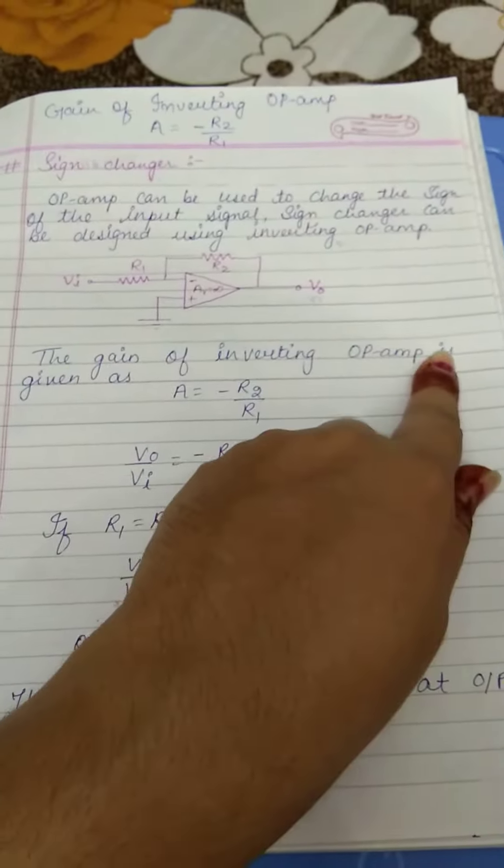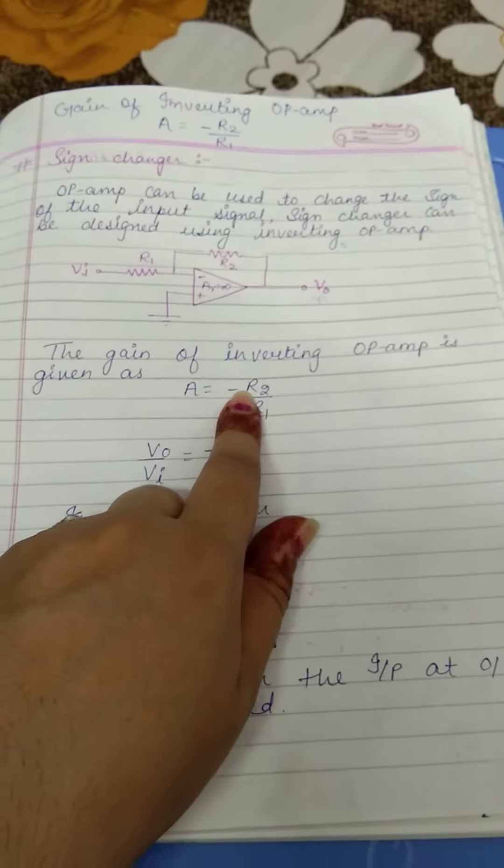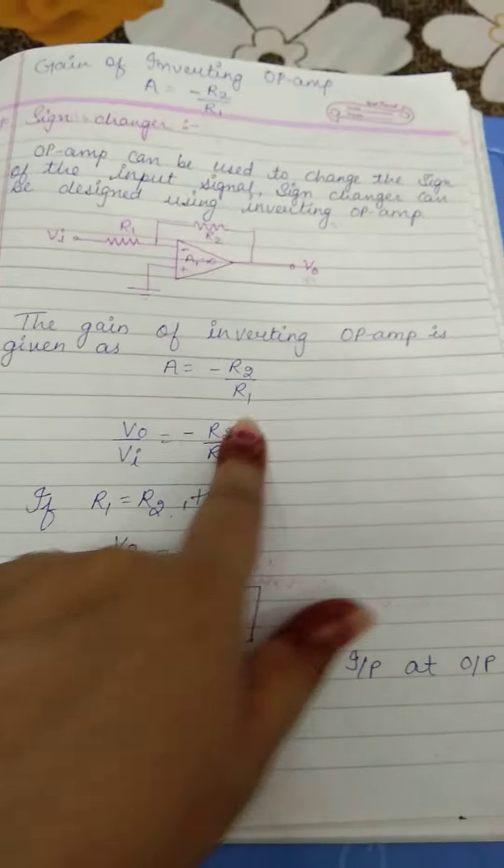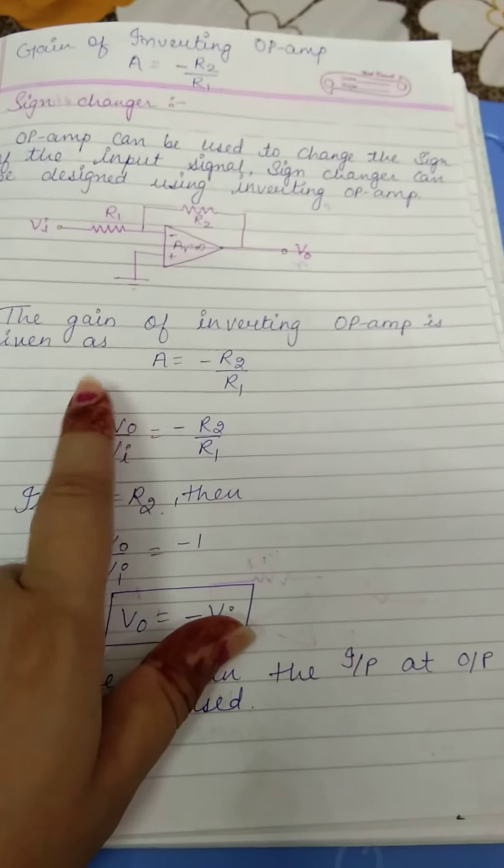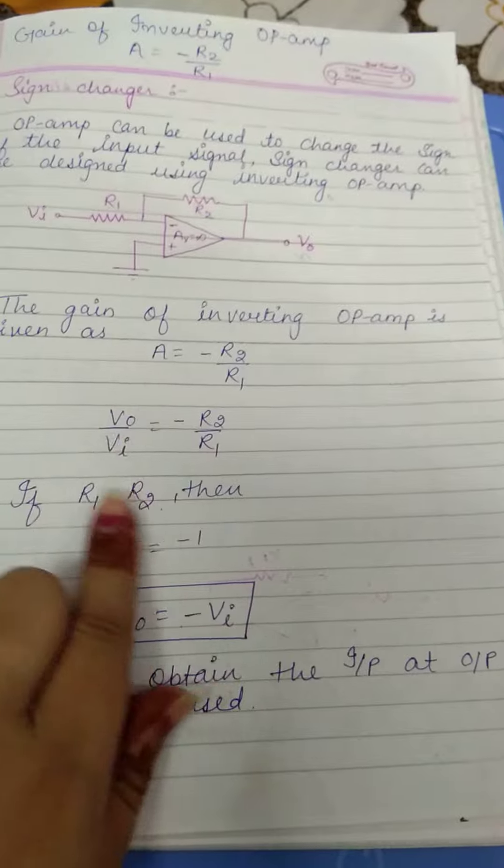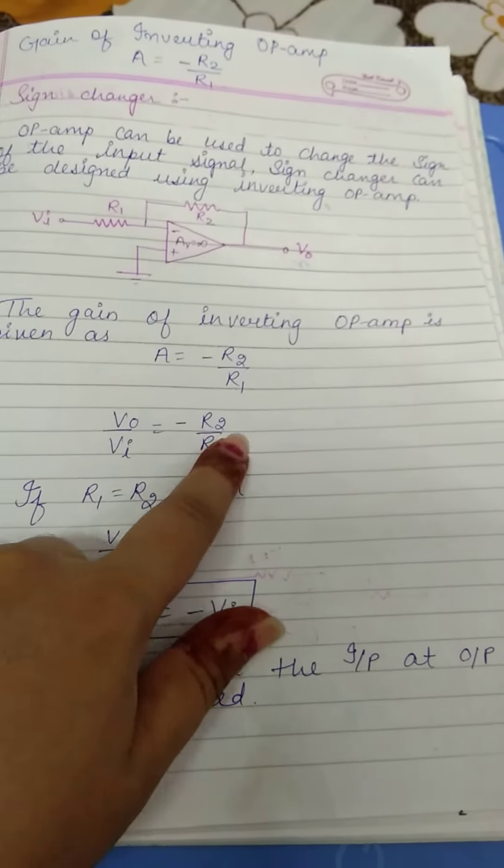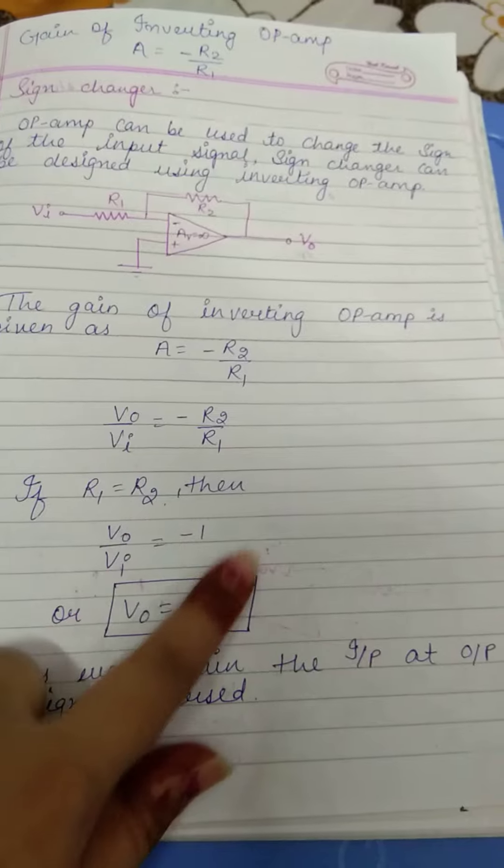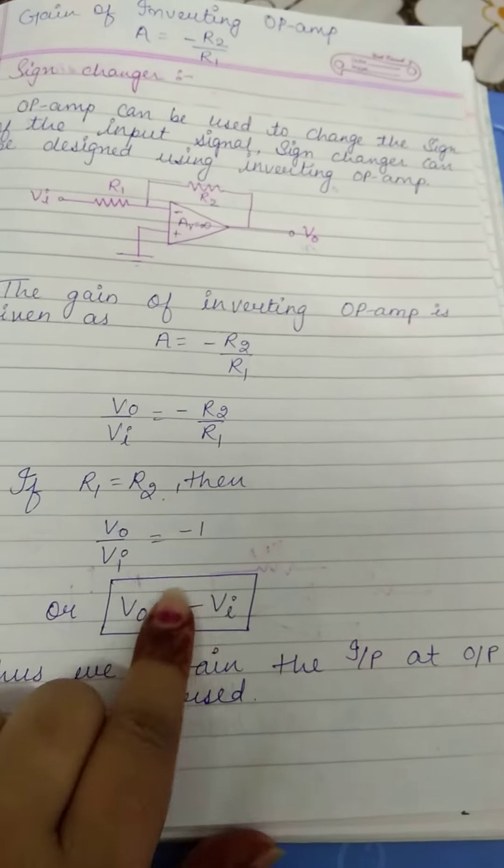The gain of inverting op-amp, we know that A equals minus R2 upon R1, so R2 divided by R1. What is the output? Output upon input: Vo upon Vi equals minus R2 upon R1. If R1 and R2 are equal, then we have minus 1.